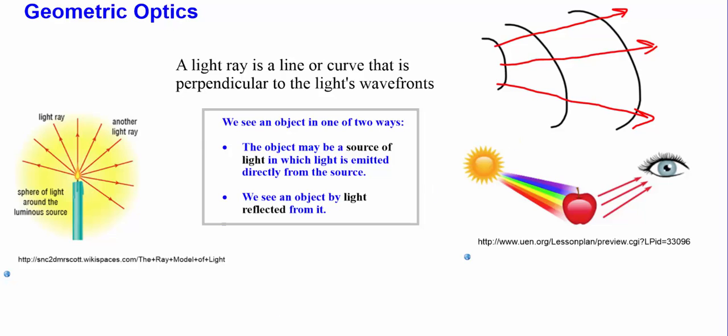It's just something that we use to model light because it helps us understand how light interacts with the environment. Just understand it doesn't actually travel that way.